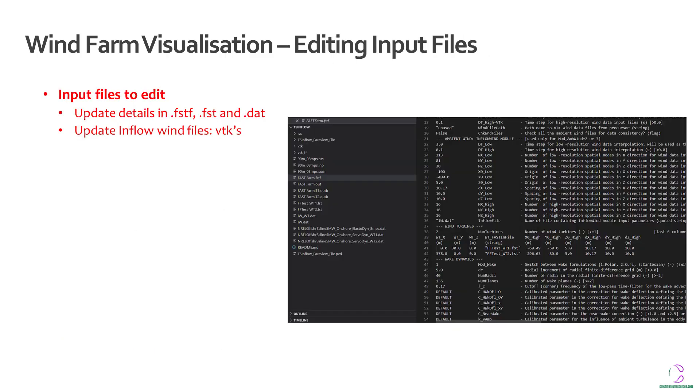So as before, the input files are the .dat files, the .fst files and the .fstf file which is the fast farm file. Then you also need to update the VTK files. It may not be that direct, but it's one of the files that need an update.